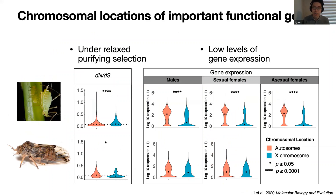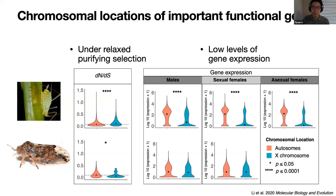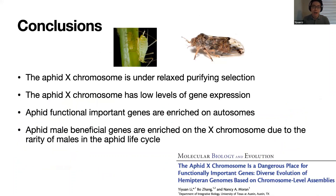Looking at selection on different chromosomes: for aphid, we found autosomes have lower dN/dS ratio than the X chromosome, indicating the X chromosome is under relaxed purifying selection. For psyllid, we see the opposite pattern — the X chromosome has lower dN/dS ratio. Looking at gene expression levels, the X chromosome overall has really low levels of gene expression in aphid, but in psyllid we didn't see a significant difference between autosomes and X chromosomes.